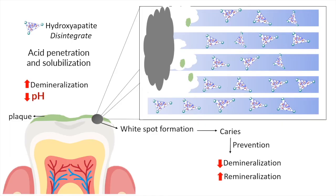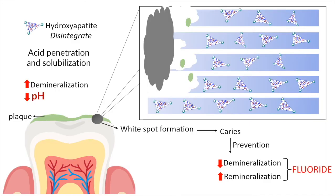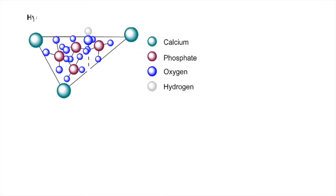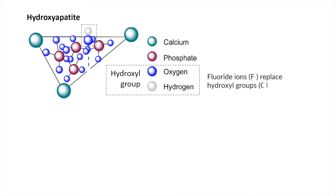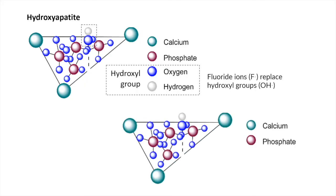Going back to the hydroxyapatite crystal structure, we saw that hydroxyapatite is made up of calcium and phosphate ions bound by hydroxyl groups composed of oxygen and hydrogen. What fluoride does is the fluoride ions replace this hydroxyl ion group in the hydroxyapatite crystal, forming fluorapatite.